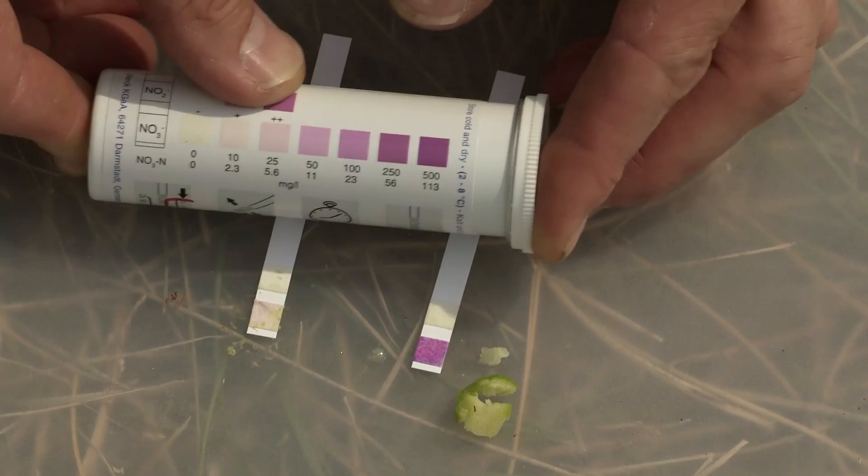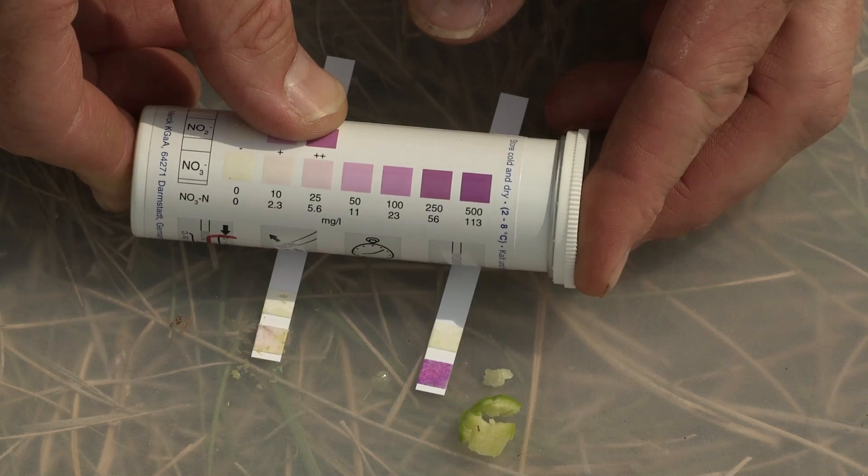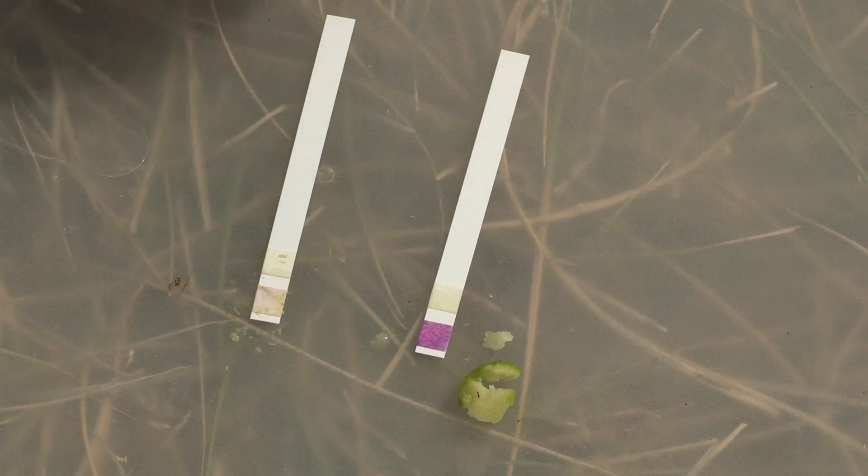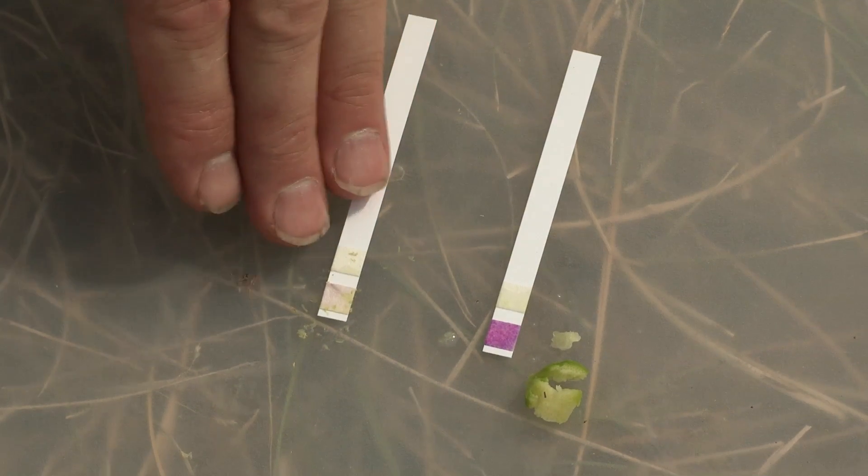In the case of the sudan grass we just checked, we see very little or no color change. We're approaching a minute right now. So the producer would be safe to go ahead and graze his cattle on that sorghum sudan grass that we tested there.